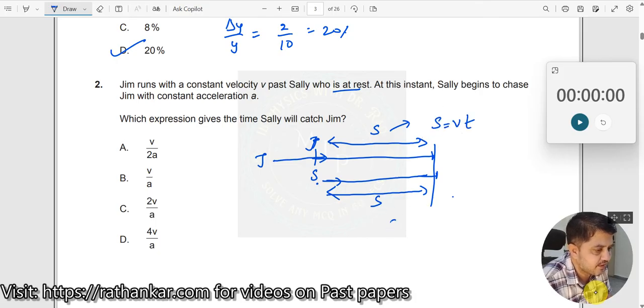Here what is the expression? s is equal to u t plus half a t square. But unfortunately u is 0 because initially it starts from rest. So therefore, this should be half a t square.